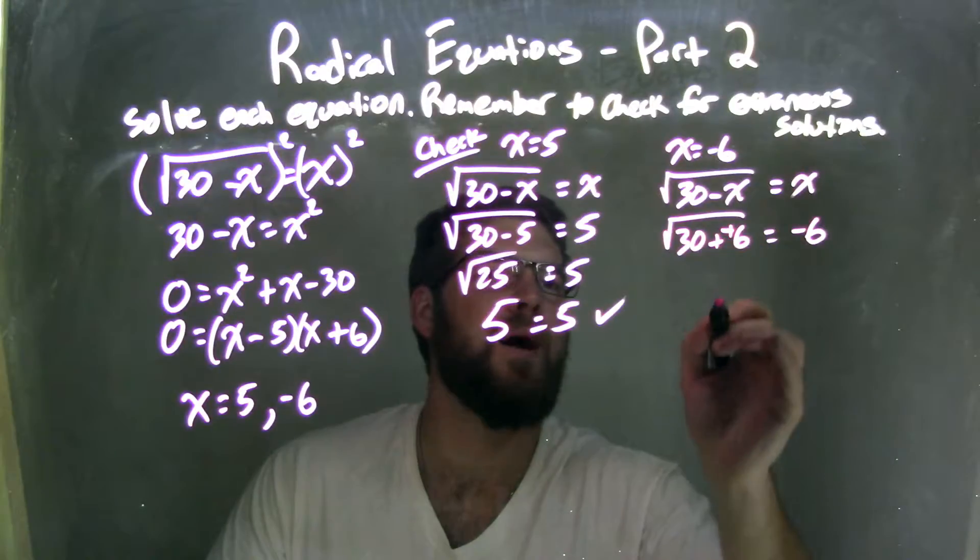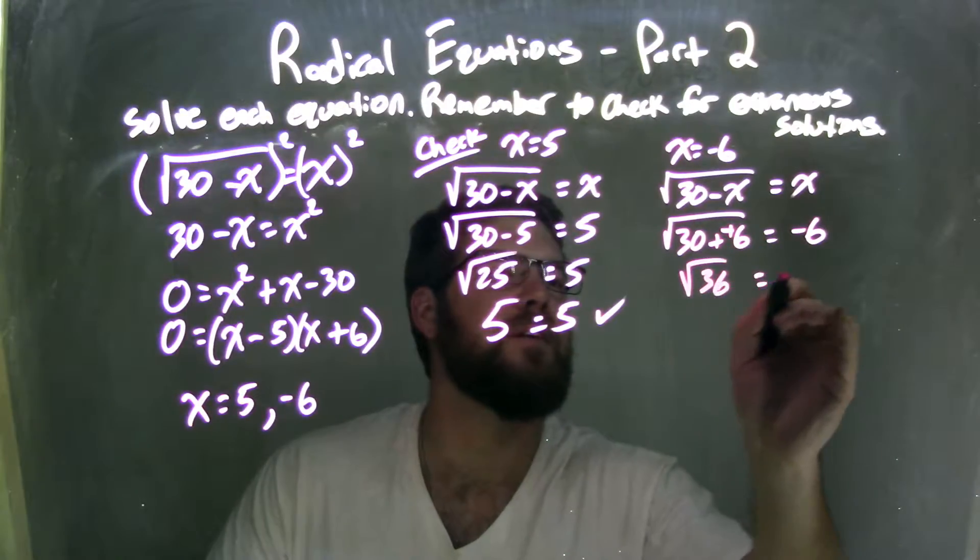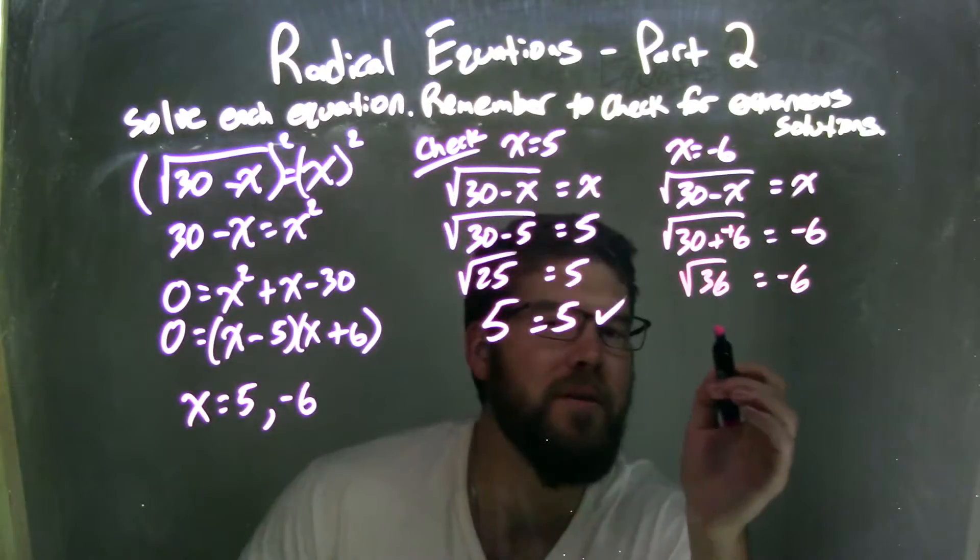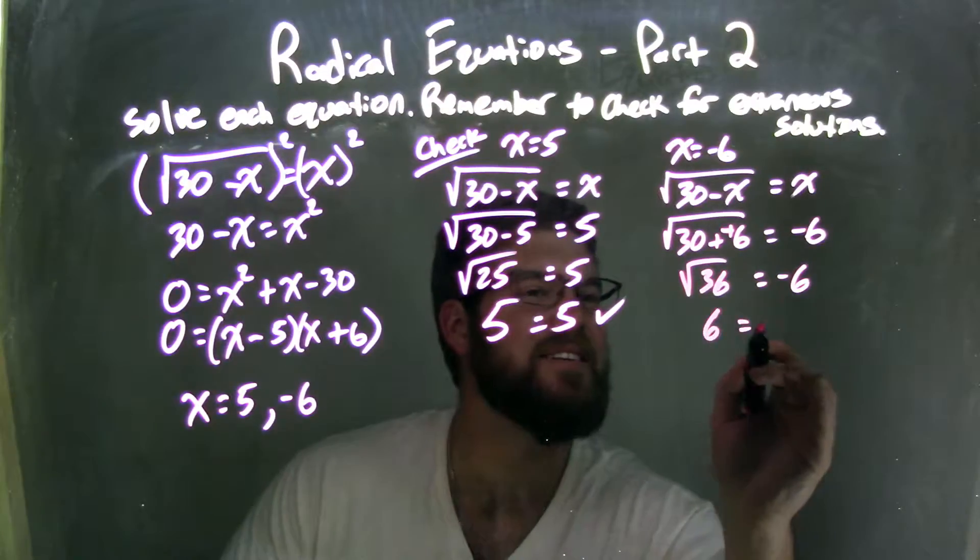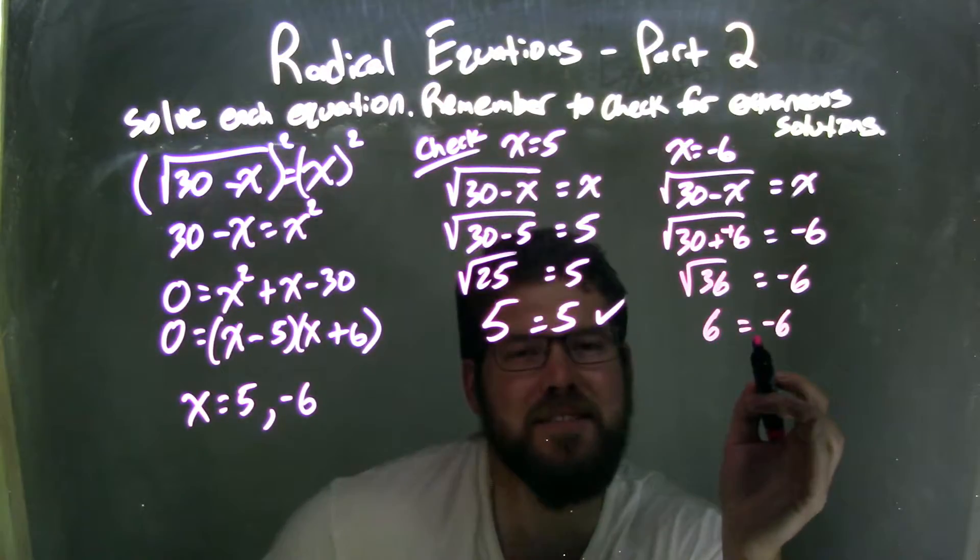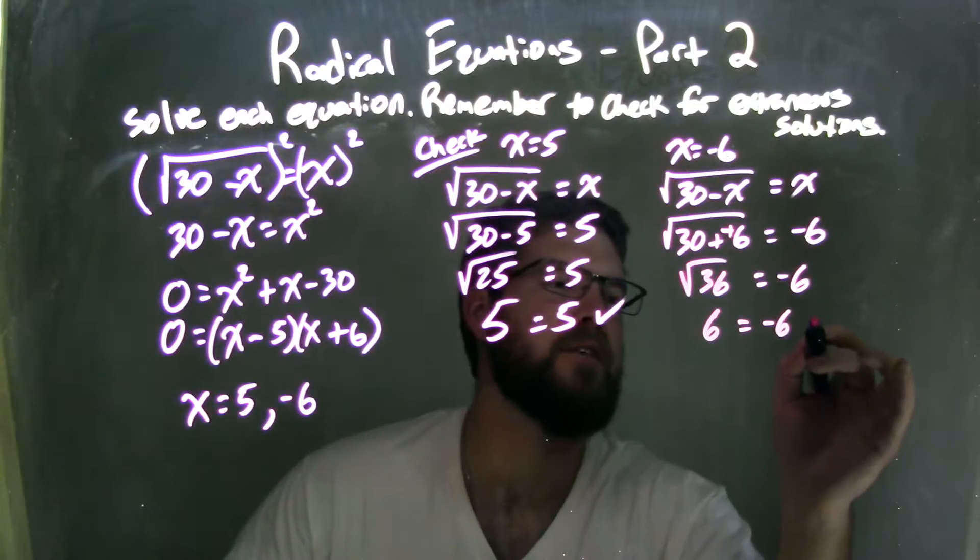Minus a negative is plus a positive, so the square root of 36 equals negative 6. The square root of 36 is positive 6, and unfortunately, 6 does not equal negative 6.